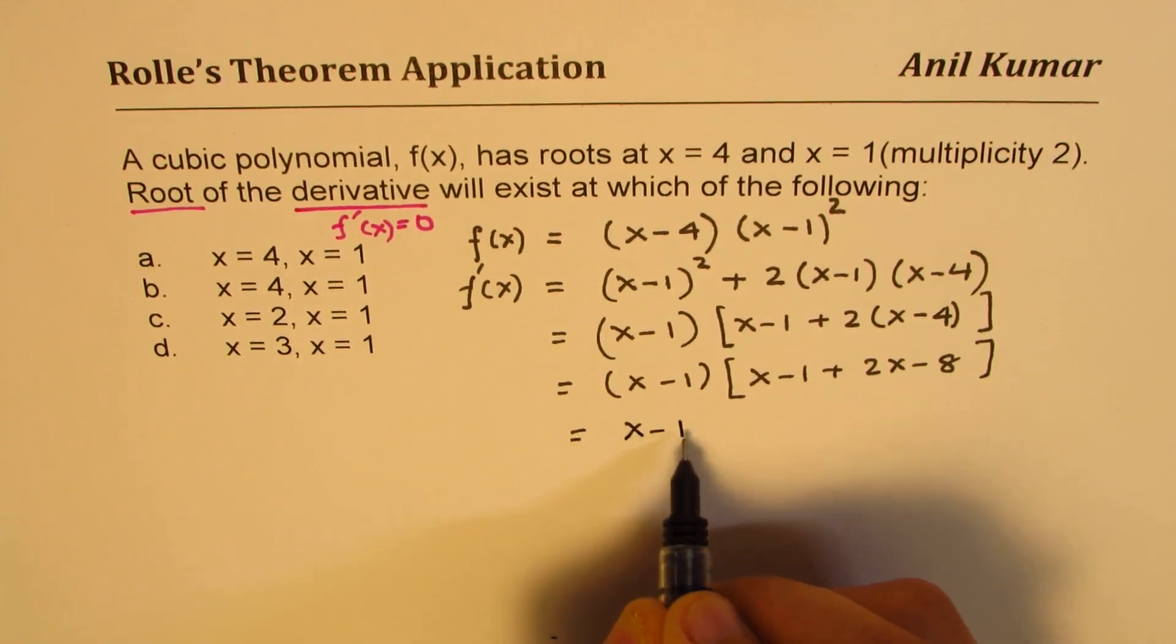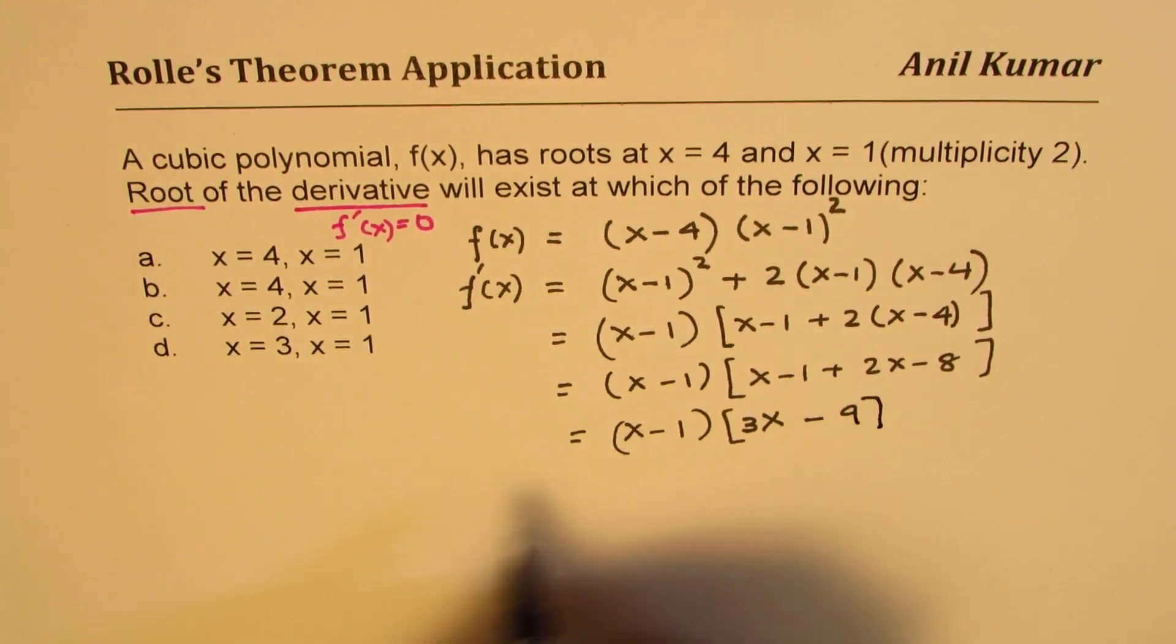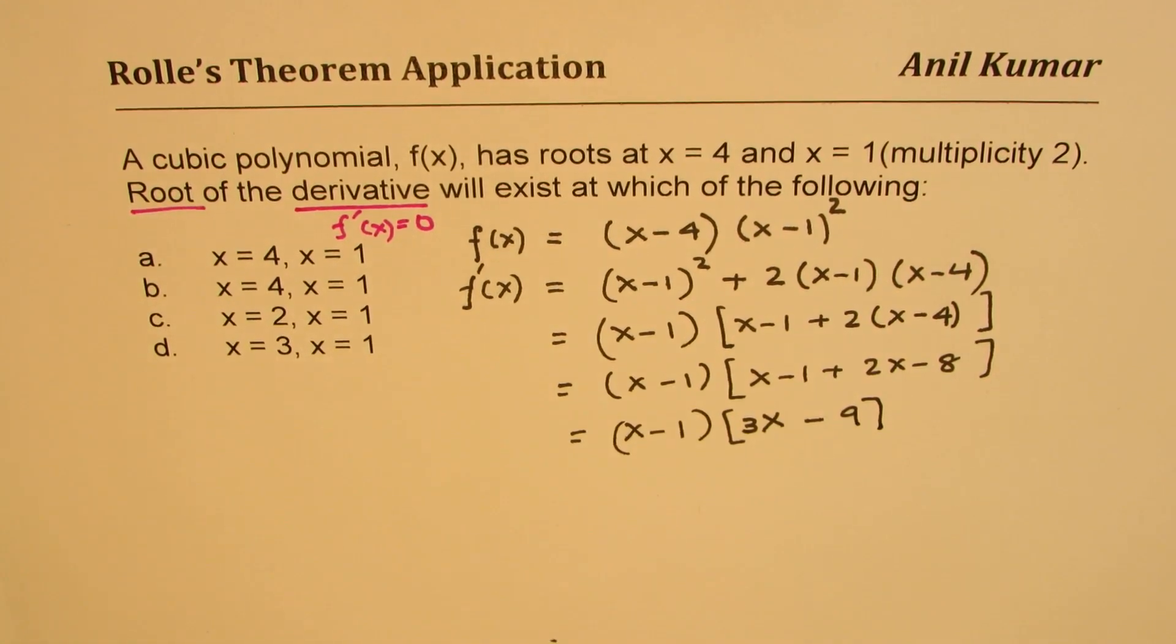That gives you (x-1) times 2x plus x is 3x, and minus 1 minus 8 is minus 9. Now so that is the derivative.